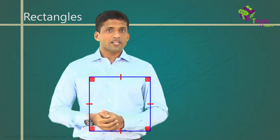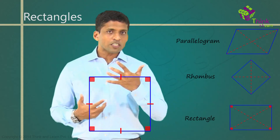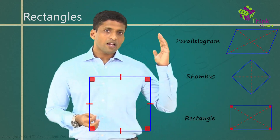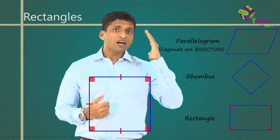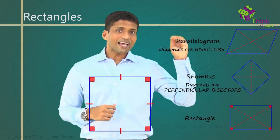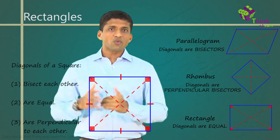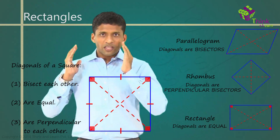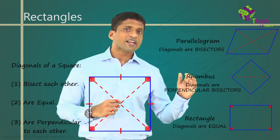Now, what about the diagonals? What will be the properties of the diagonals of a square? Very simple. Diagonals will bisect each other, as in a parallelogram, because in a parallelogram diagonals bisect each other. In a rhombus, diagonals are perpendicular to each other. In a rectangle, diagonals are equal. So, in a square, all these qualities will be there. Diagonals will bisect each other like in a parallelogram, they will be of equal length because a square is a rectangle, and they are perpendicular to each other because a square is a rhombus also.